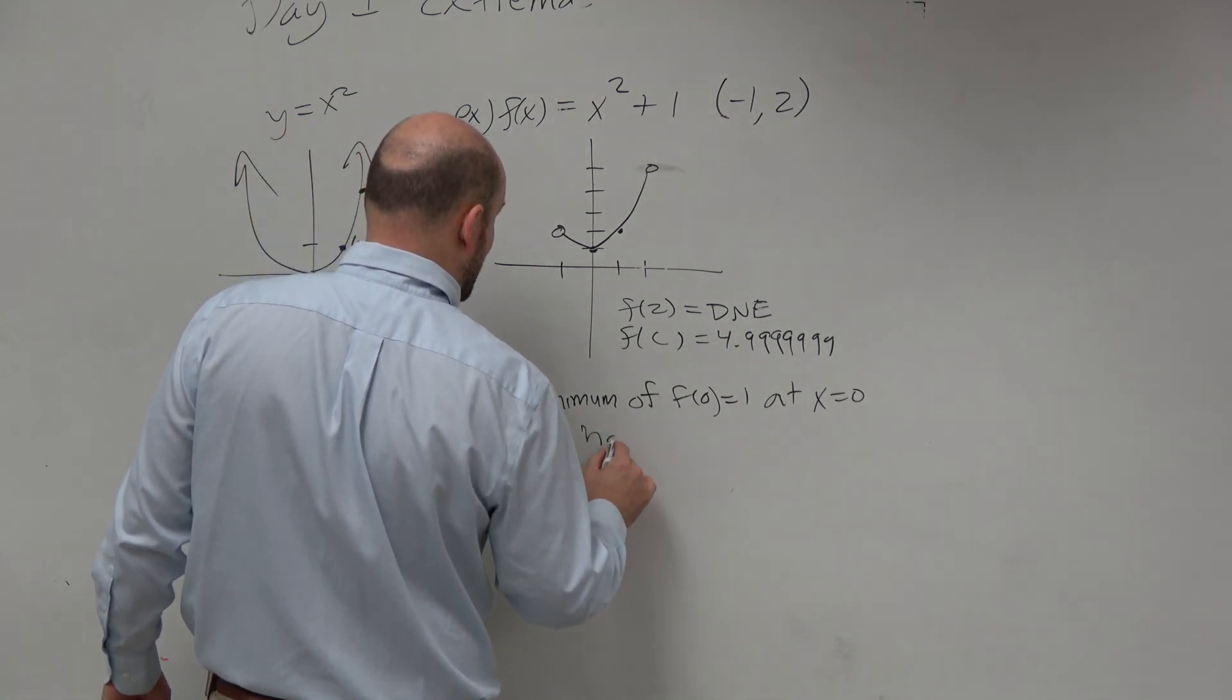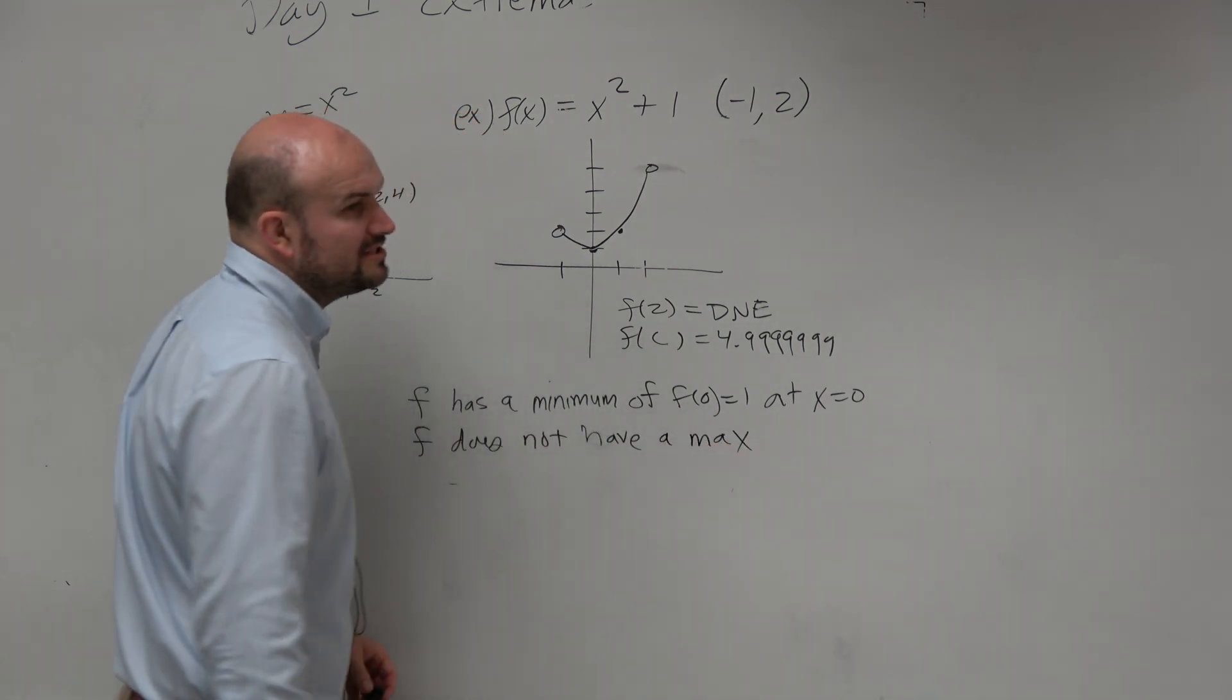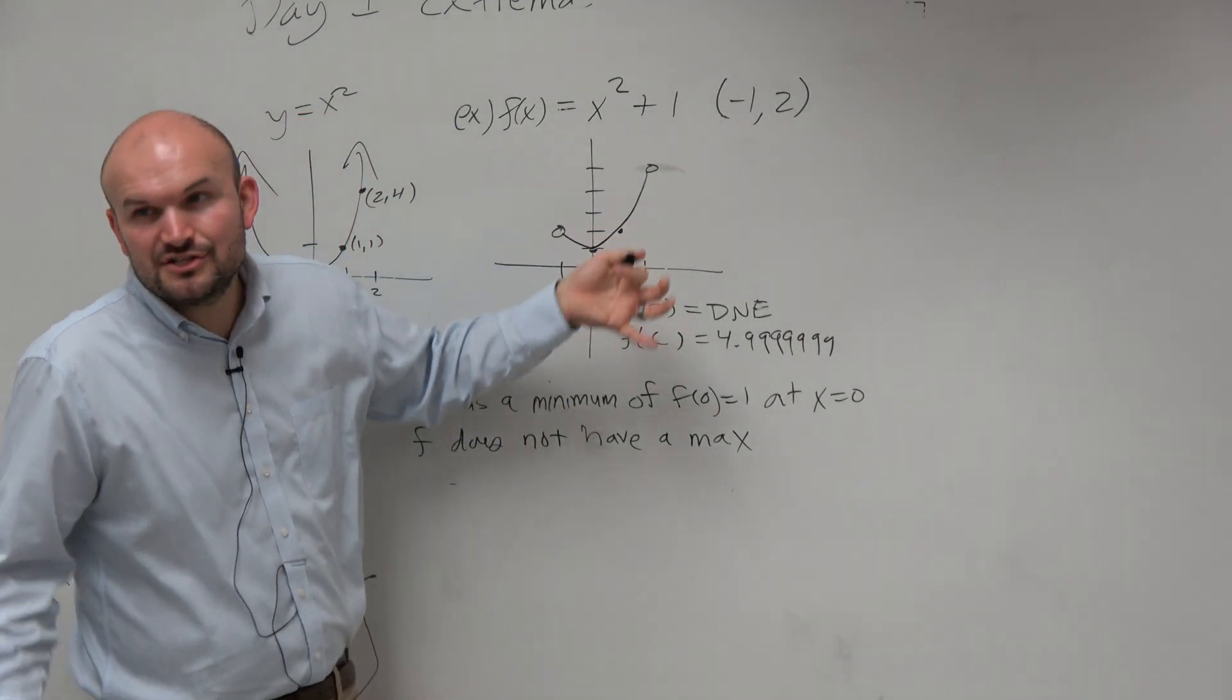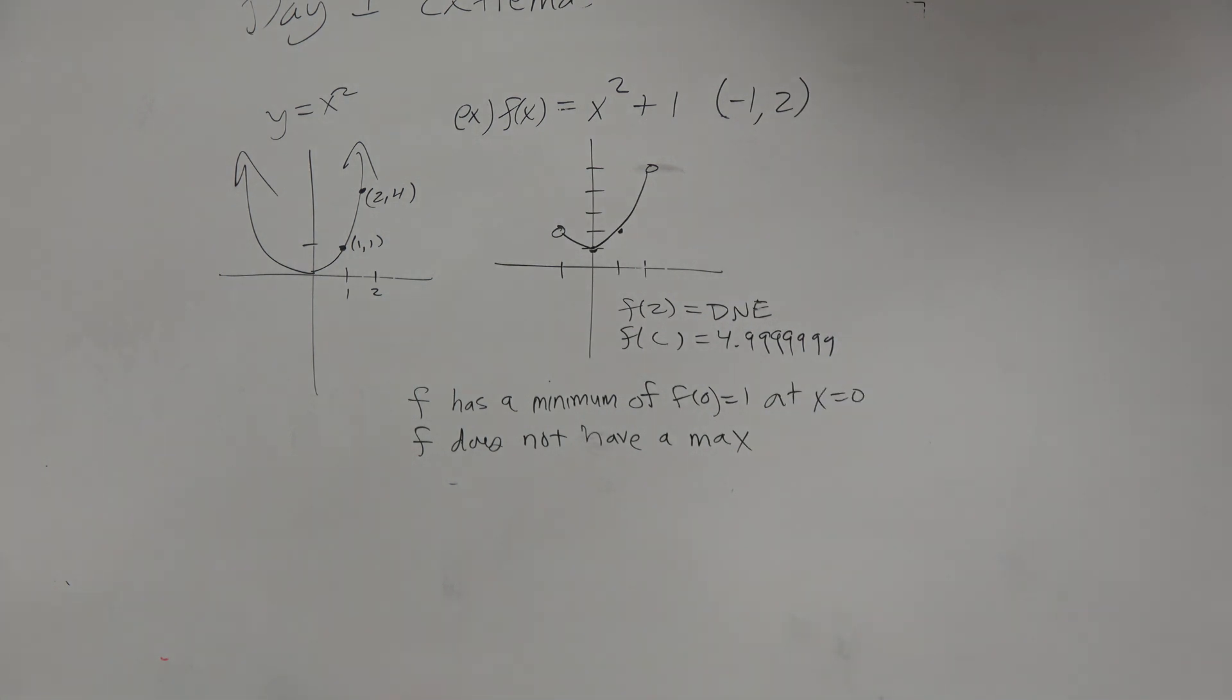So even though it kind of is contrary, even though it doesn't kind of look right, because you're like, oh, it only goes so high. But we actually can't write a value. So we're going to say the graph has no absolute max. All right?